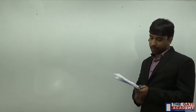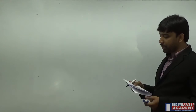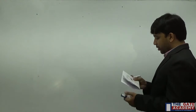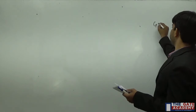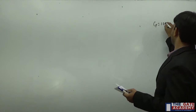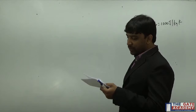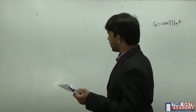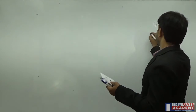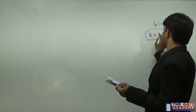Look at question number 31. A calorically perfect gas has specific heat at constant pressure Cp equal to 1000 joule per kg Kelvin. The fluid enters and leaves the gas turbine with the same velocity.